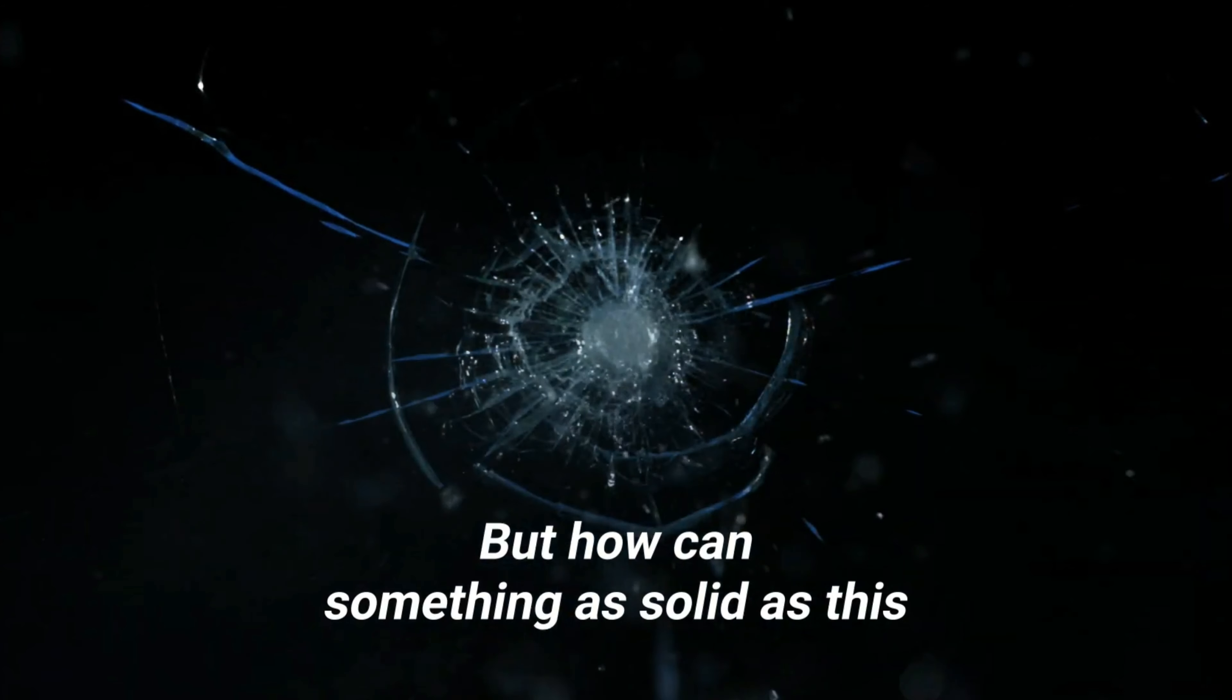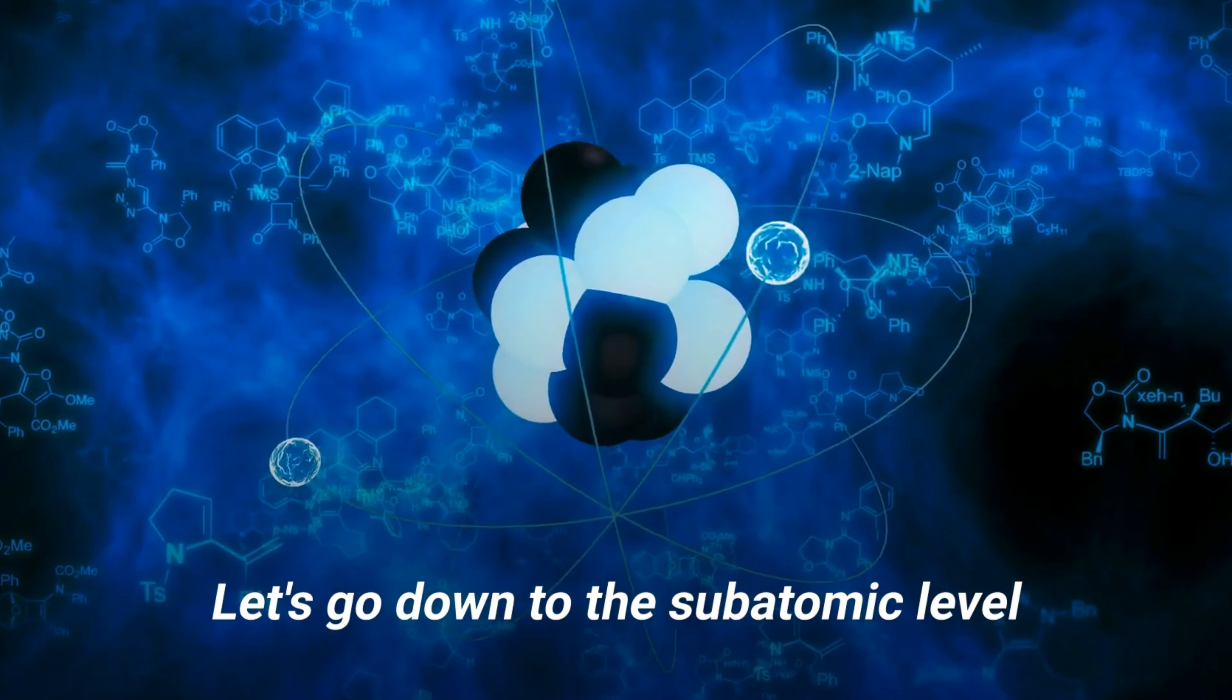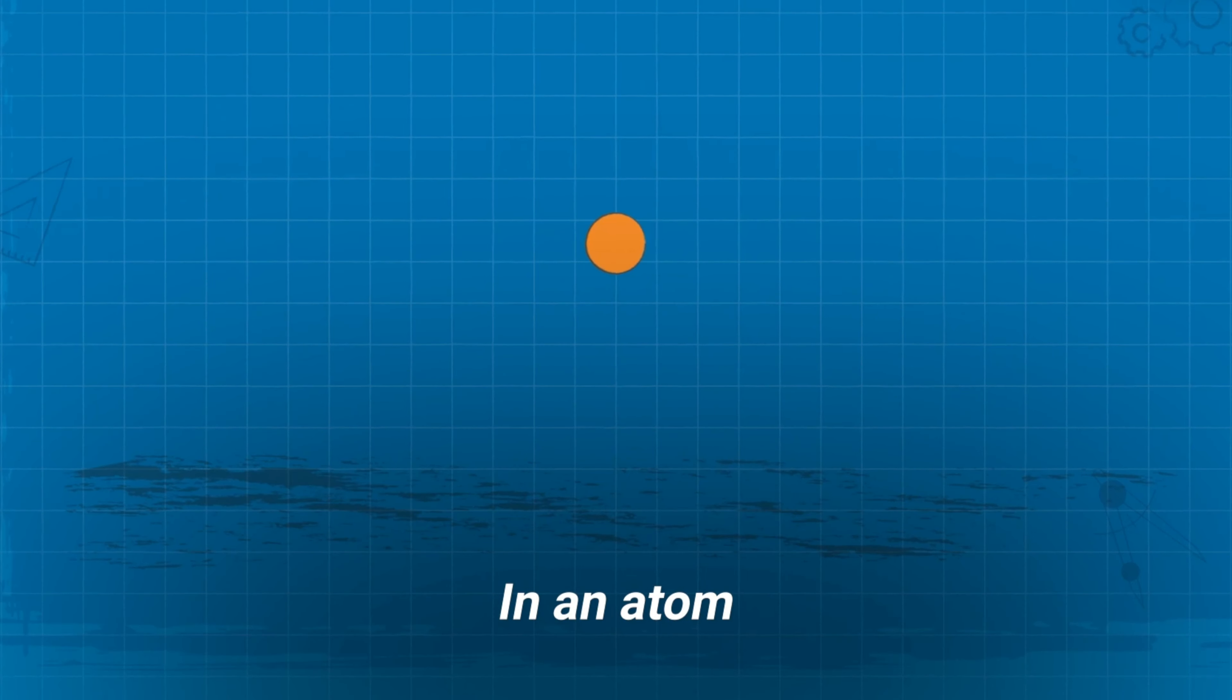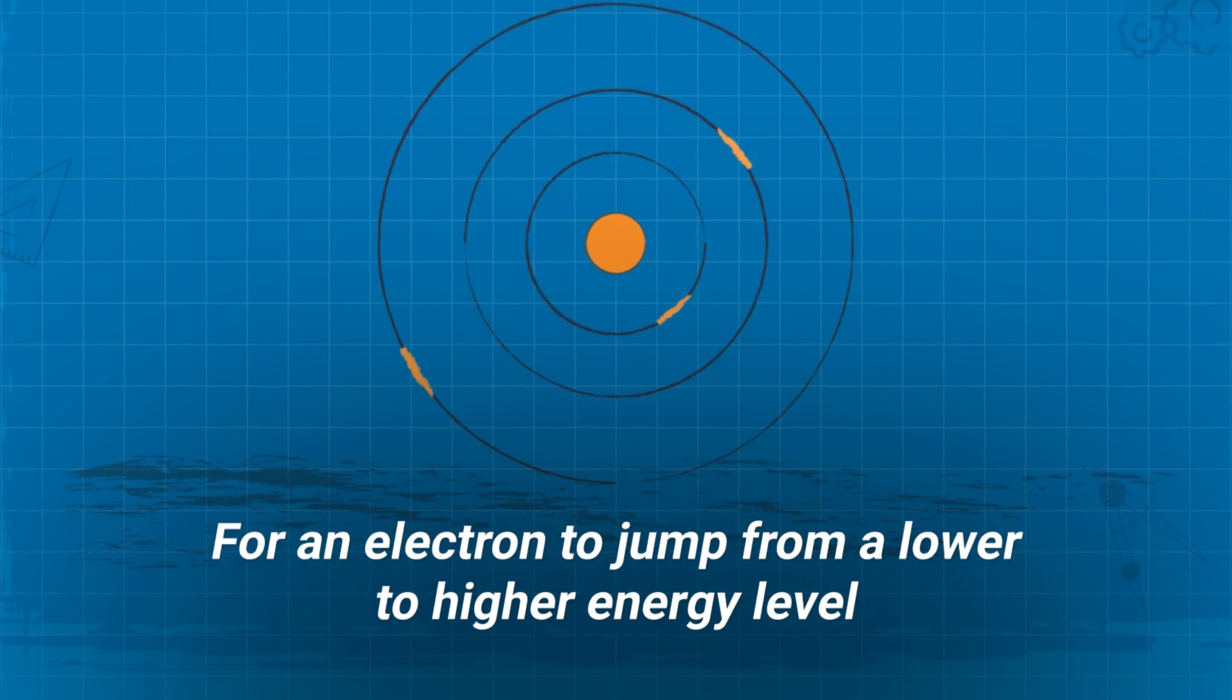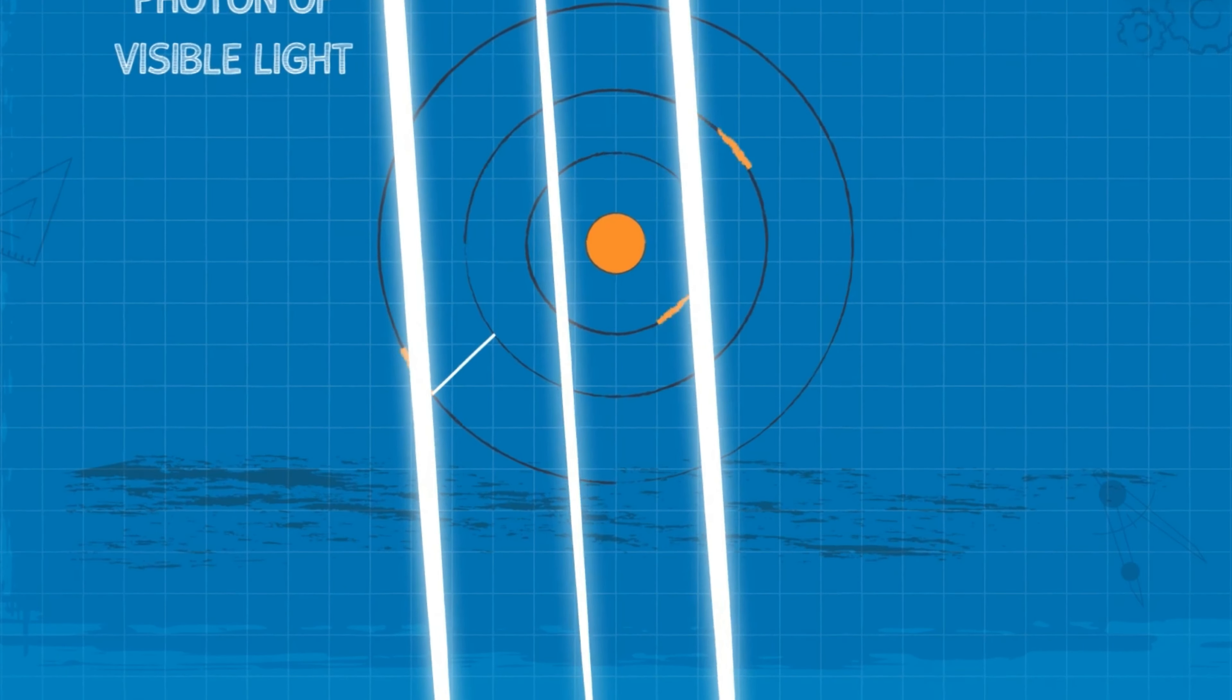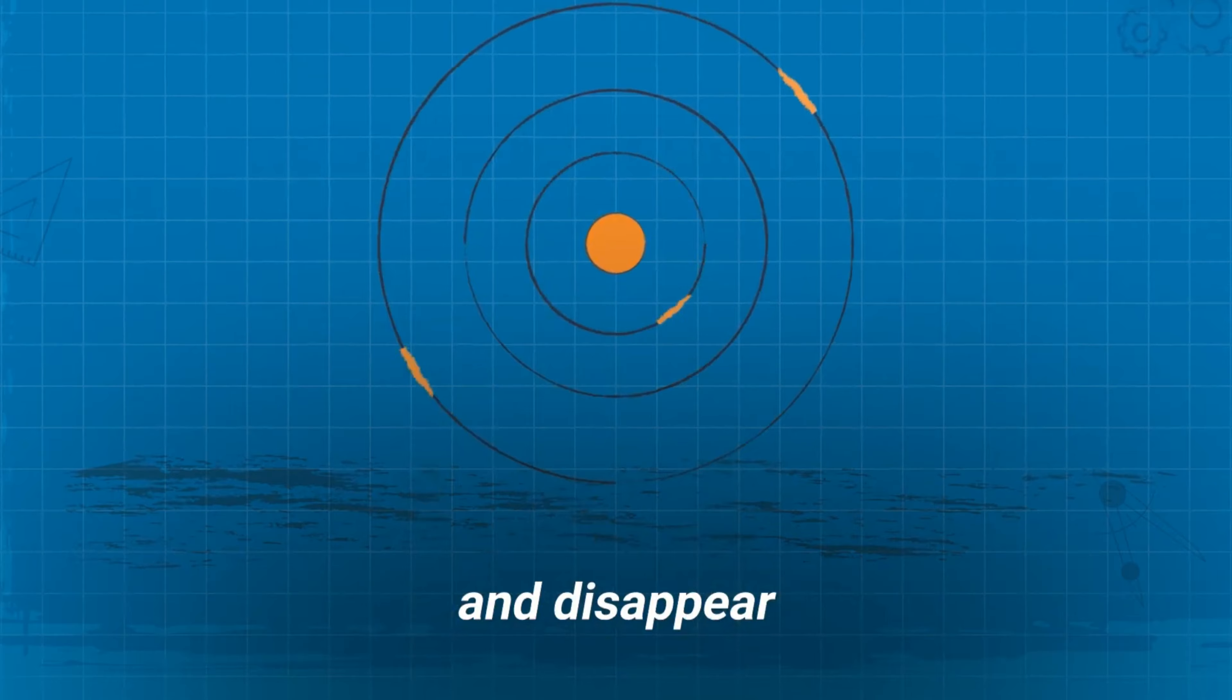But how can something as solid as this be so transparent? Let's go down to the subatomic level. In an atom, the electrons orbiting a nucleus occupy different energy levels. For an electron to jump from a lower to higher energy level, a photon of visible light must give up its energy to an electron and disappear.